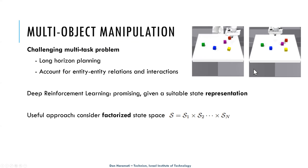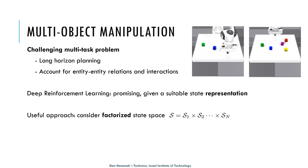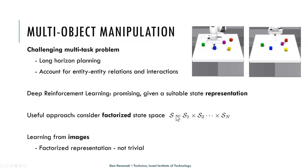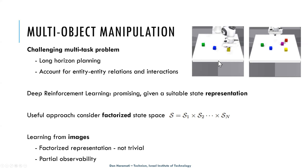Acquiring this factorized state when dealing with ground truth observations, typically only available in simulation, is fairly trivial since each individual state is maintained separately. But when working from images, acquiring this factorized state is not trivial at all. Working from images also introduces partial observability — some objects are occluded while the robotic arm is being manipulated.